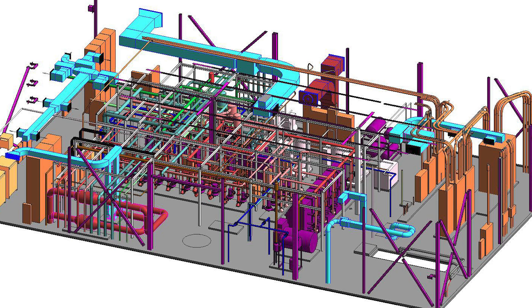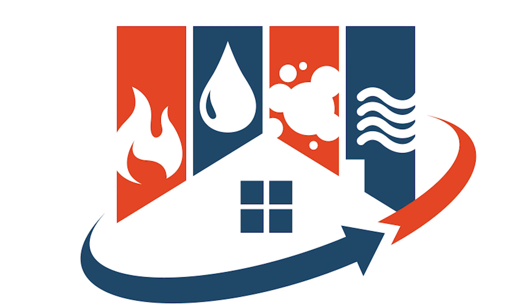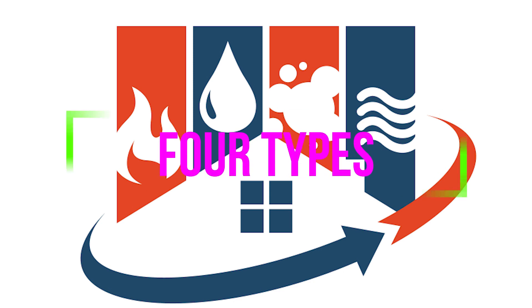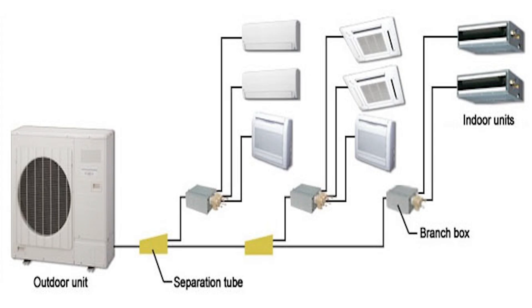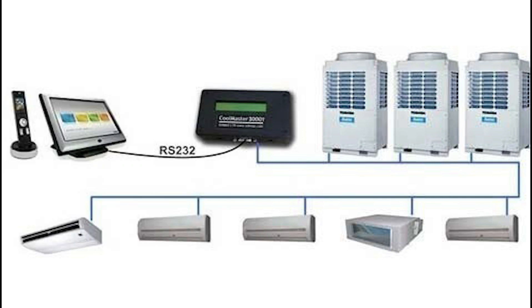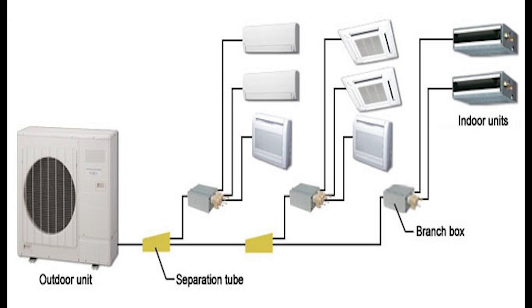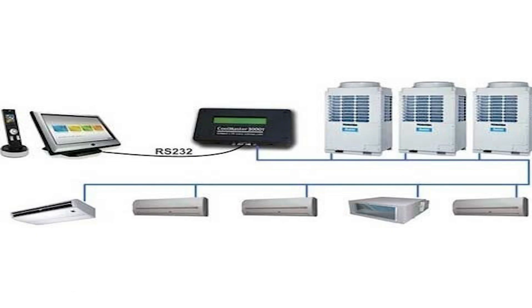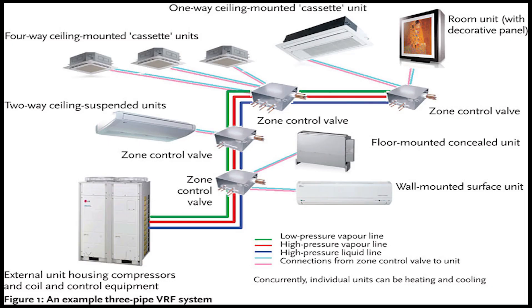The second type of air conditioning is the distributed system, also called the large-scale system. It comes in four types: the multi-split system, the VRF system, the package unit, and the chiller. The multi-split unit is the larger version of the split unit but with multiple indoor units — up to a maximum of 10.